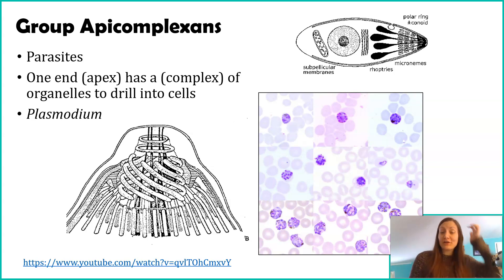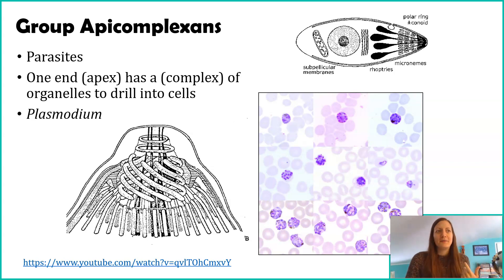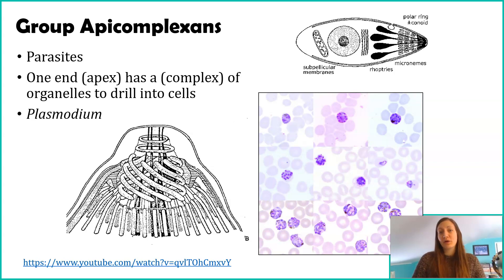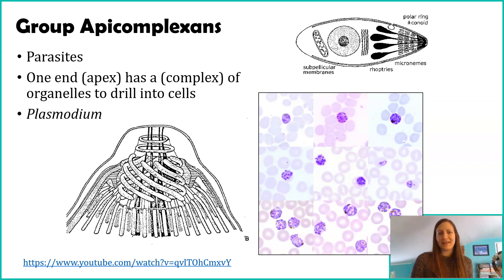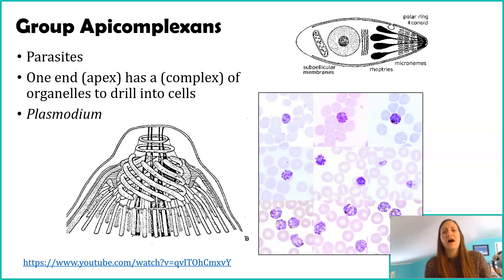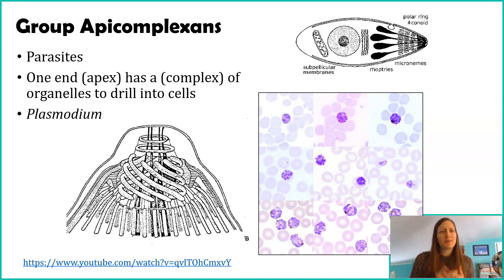Hopefully you learned a bit more about malaria. This is still a prevalent disease and condition that affects tons of people around the world. It's kind of interesting to learn that it's actually a protist causing it — when people think of diseases we typically think of bacteria and viruses, but it's interesting to learn about these eukaryotic cells that are causing it.